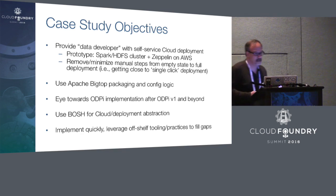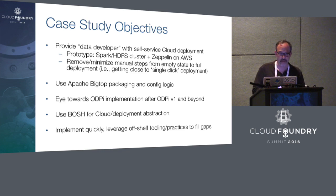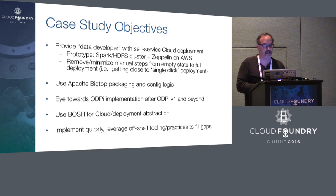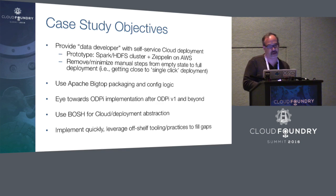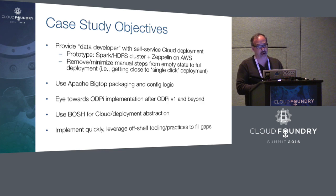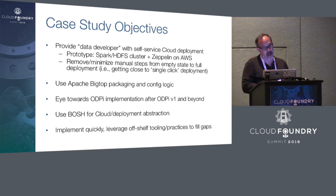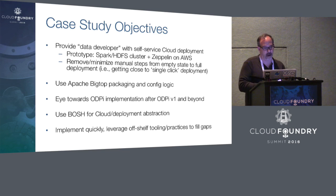I'm going to describe a case study and a prototype that we recently did, looking at using BOSH and BigTop to do a sample big data deployment. We chose a Spark cluster with HDFS and a Zeppelin front end, with AWS as the reference cloud platform. Along with figuring out how to use BOSH and identify gaps, we also wanted to look at the problem of one-click deployment — the ability for a field engineer who wants a Spark cluster up to just enter Amazon credentials and have a running Spark-Zeppelin cluster.